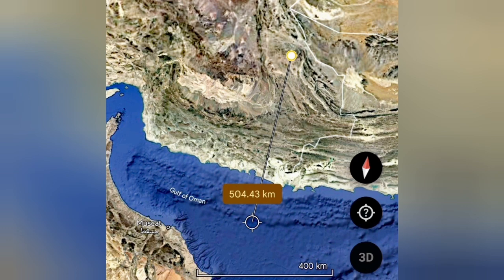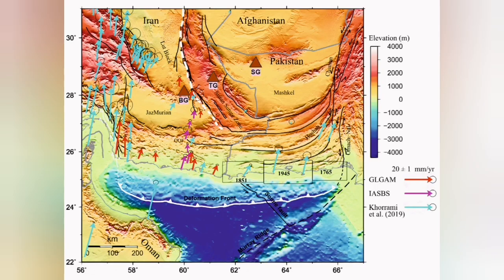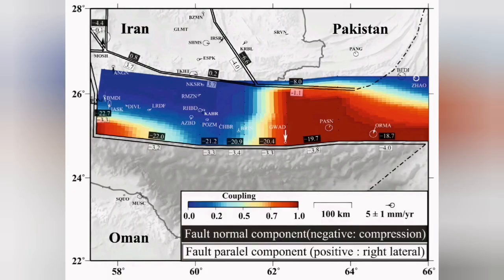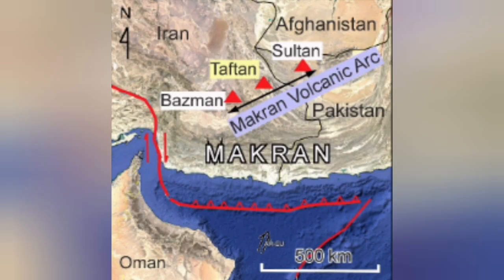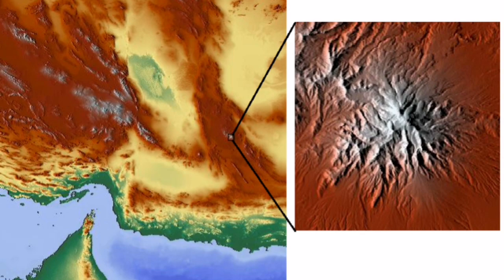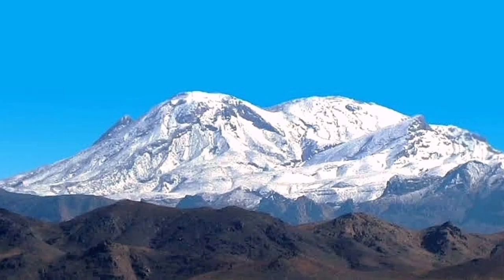We now understand why this has happened. Seismic measurements have shown two different slopes for the oceanic plate going down, and we think there is a detachment of the oceanic plate creating this phenomenon. In the Iranian part, the volcanoes are closer to the trench — this is a unique location because in Eurasia we don't have many subduction zones like this. It has created one of the most famous volcanoes in Iran: Taftan.